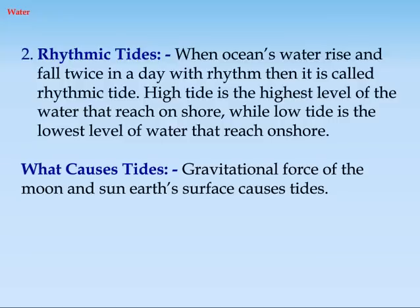2. Rhythmic tides: when ocean water rises and falls twice in a day with rhythm, it is called rhythmic tide. High tide is the highest level of the water that reaches on shore, while low tide is the lowest level of water that reaches on shore.